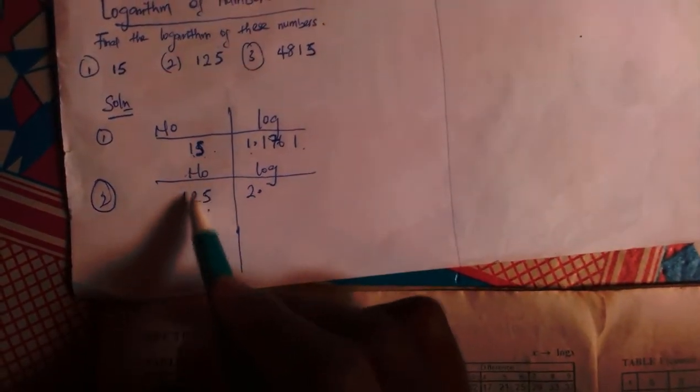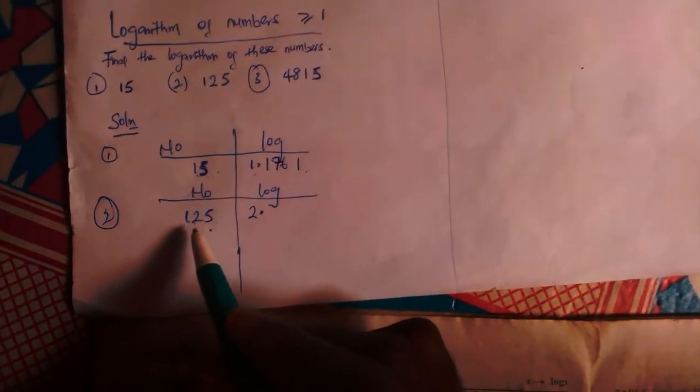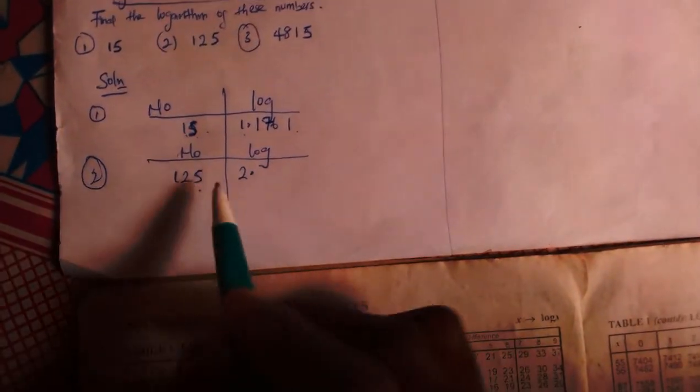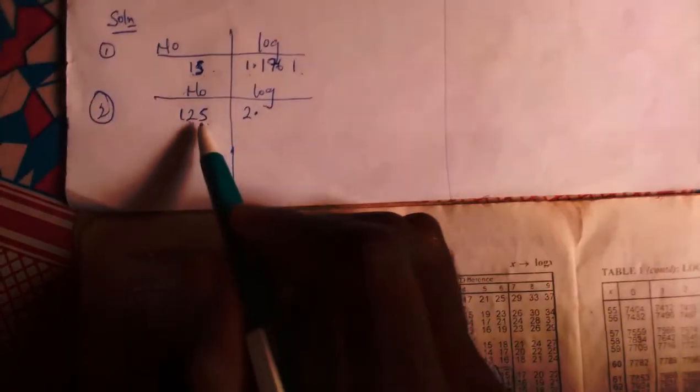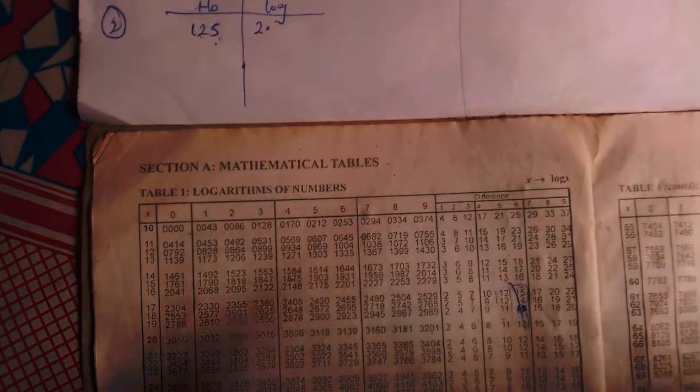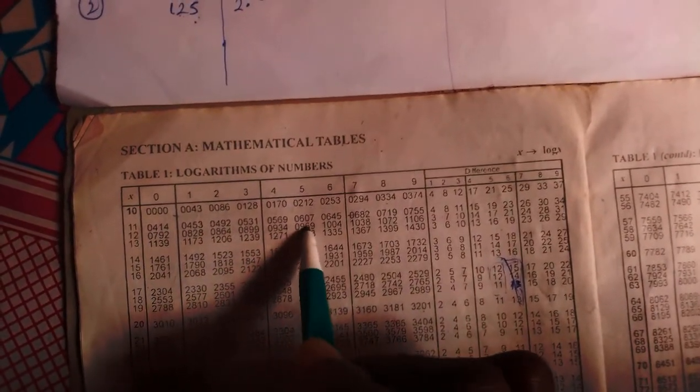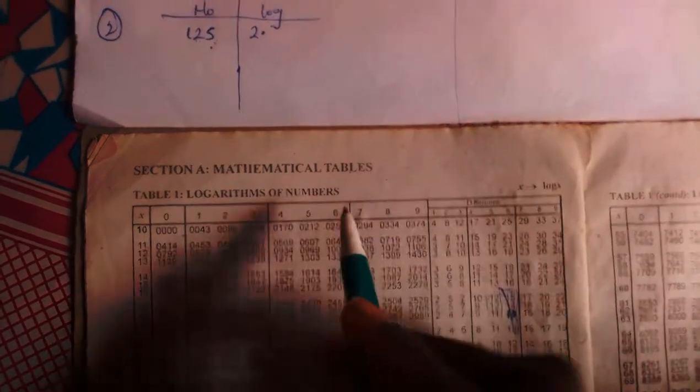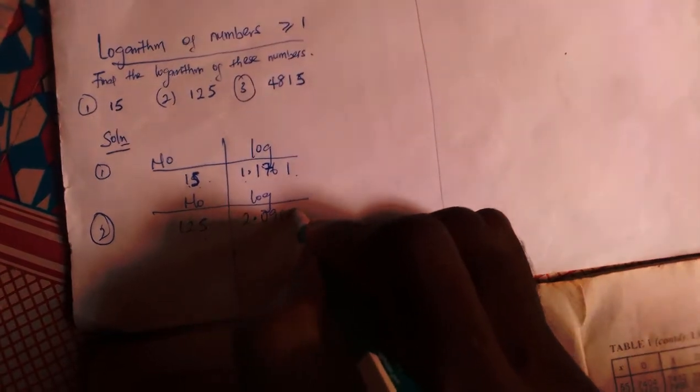Now how do I check this? 125 is not in my four-figure table. Why? Because it ends at 99. Now what will I do? I will check 12 under 5, not 12 under 0 in this case. I will check 12 under 5. So let's go to 12. This is 12, trace it to 5. That is 0969. So I will be writing 0969.